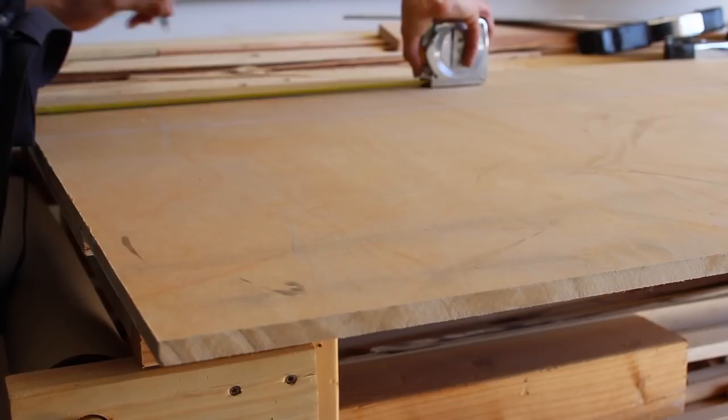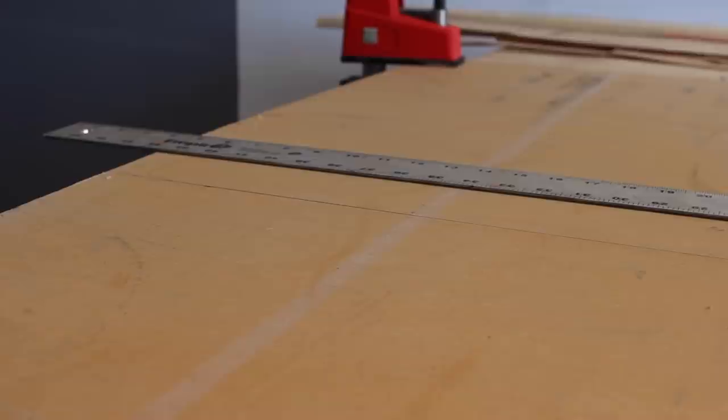You want to make sure that you clamp down and secure the piece that you're cutting with a circular saw to make sure it's not wiggling when you go to run the saw through it.